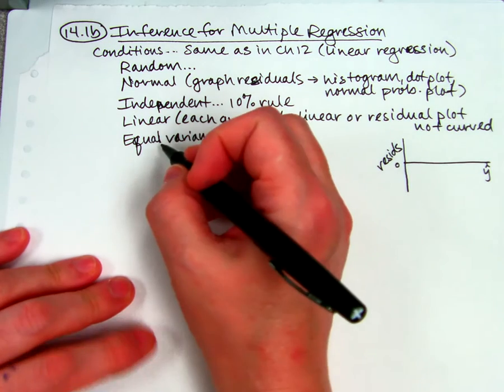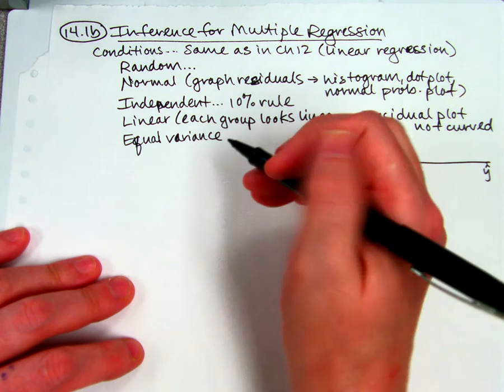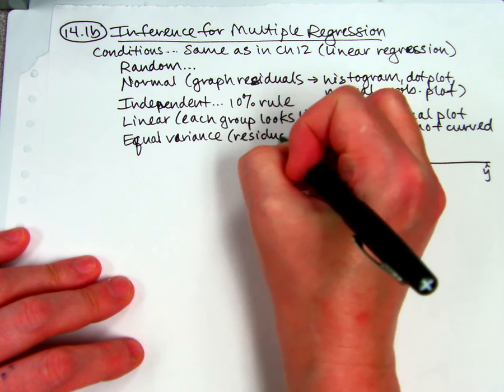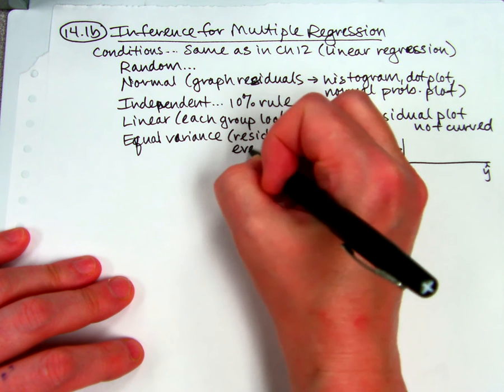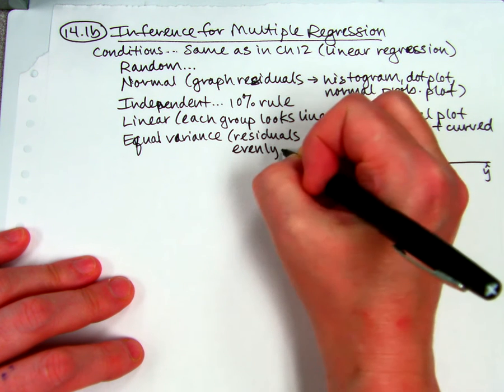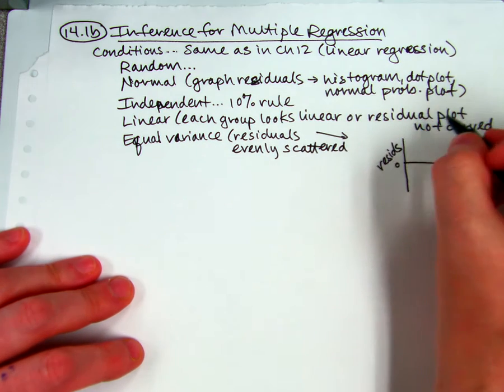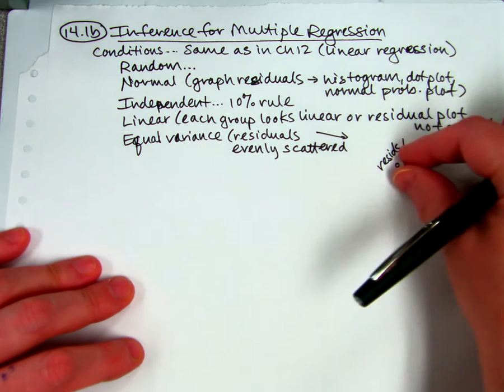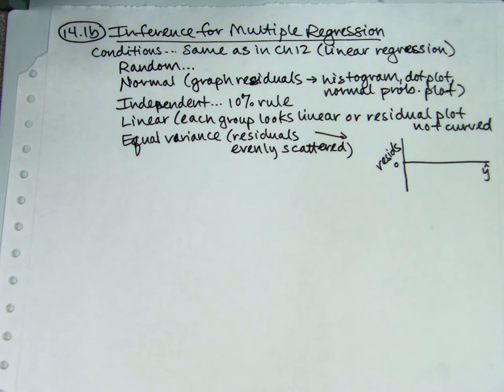Equal variance, you look at the residuals again. They have to be evenly scattered and not spread all the way along, like icing on a cake and not just icing that one end and the other. So that's the first good news is you already know how to check the conditions.